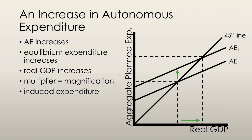The magnitude of the increase in aggregate expenditure that results from an increase in autonomous expenditure is determined by the multiplier. The new aggregate expenditure function after an increase in autonomous spending is determined by adding the amount of the increase to every point on the graph, so we just shift that curve upwards. The new point at which the aggregate expenditure function equals the 45-degree line is the new equilibrium point.